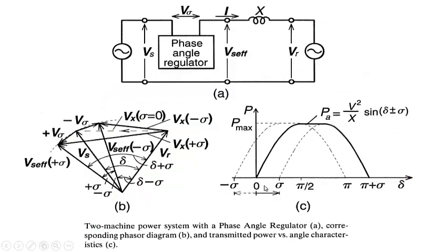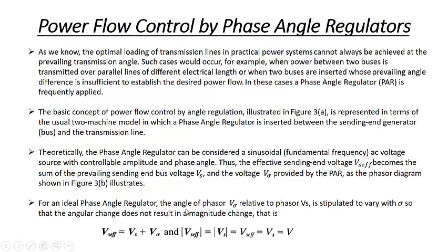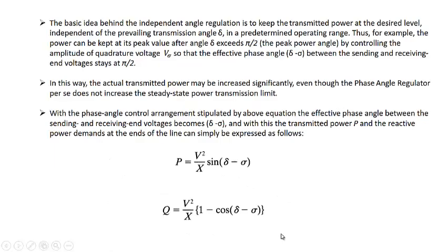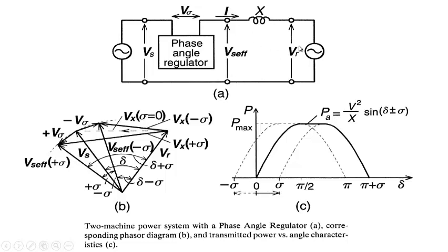For an ideal phase angle regulator, the angle of phasor V_sigma relative to Vs is stipulated to vary sigma so that the angle change does not result in a magnitude change. This means Vs_effective is the phasor sum of Vs and V_sigma, but the magnitude of Vs_effective equals the magnitude of Vs — both equal V. With this condition, and a reactance X between the two ends, power equals V²/X times sin(delta ± sigma), and reactive power Q equals V²/X times (1 minus cos(delta ± sigma)).